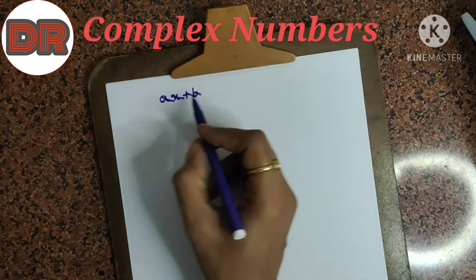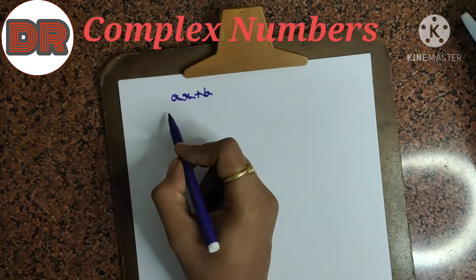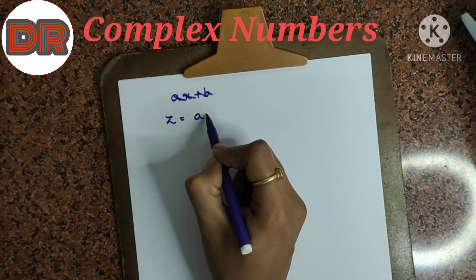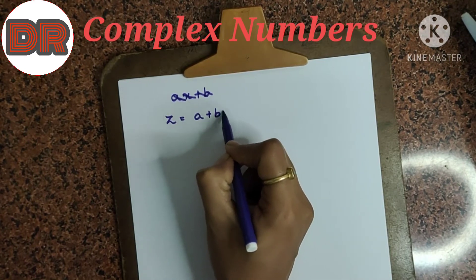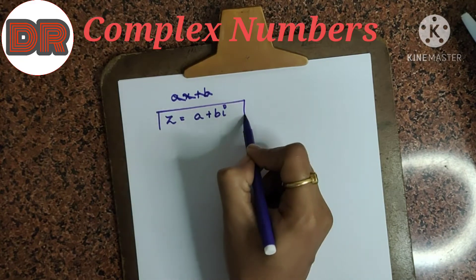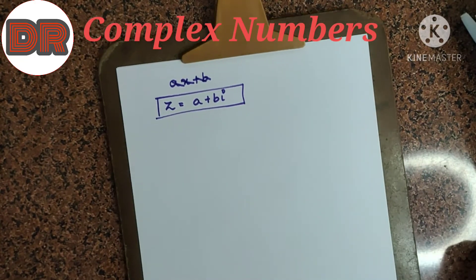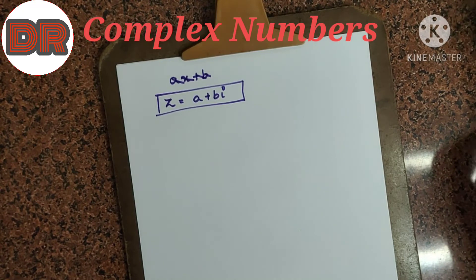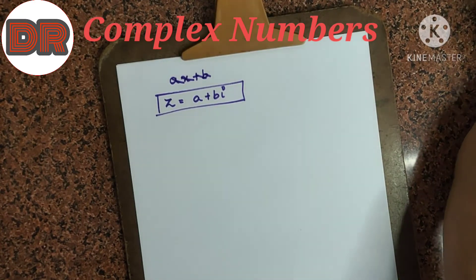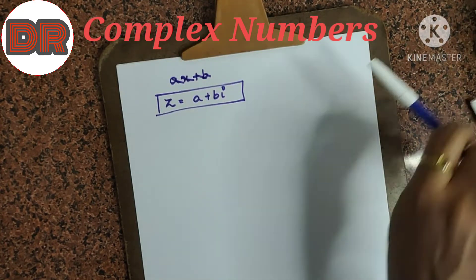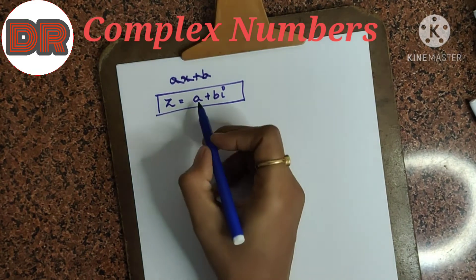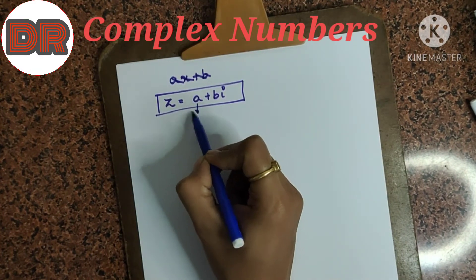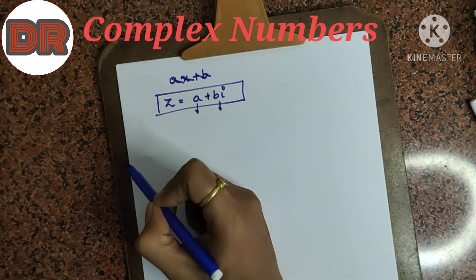We have defined a complex number: z is equal to a plus bi is a complex number. What is the definition of a complex number? We have defined it earlier. It is the sum of a real part and an imaginary part — this is the real part and this is the imaginary part.